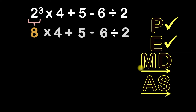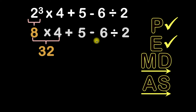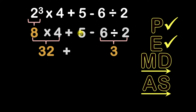Now we'll go to step three — multiply or divide from left to right. We start on the left, and any multiplication or division we see, we do. Here we have 8 times 4, which equals 32. We also have 6 divided by 2, which equals 3. Now we bring down whatever we haven't used: the plus sign, the 5, and the minus sign. Since there's no more multiplication or division, we are done with step three.